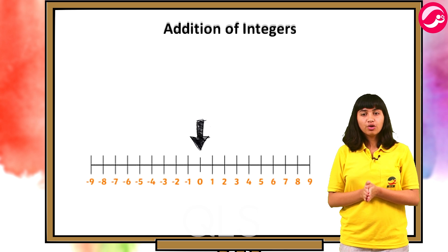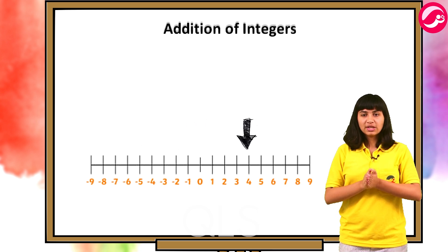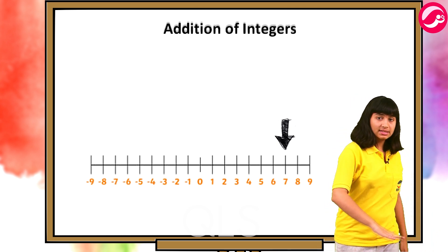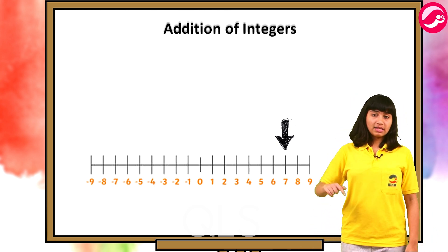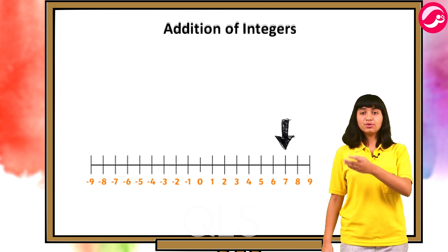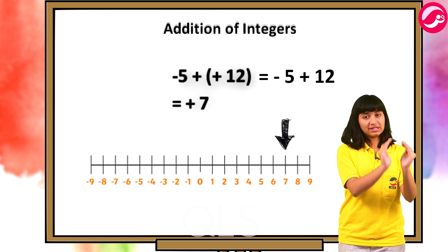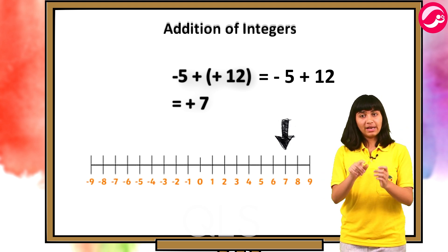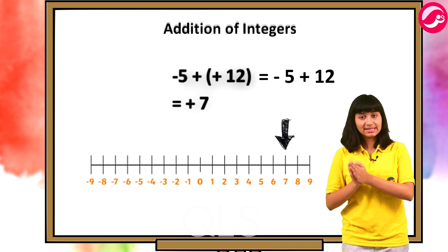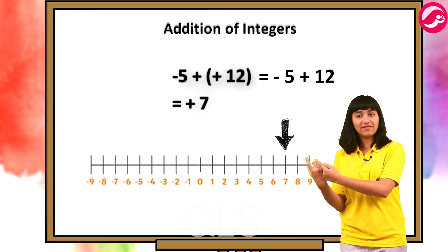Go down five steps from the ground level and then move twelve steps further up. Pahle paanch steps neeche utari — minus five — phir waapis se mujhe twelve steps upar chadhni hain. Toh likhungi minus five plus twelve. Answer hoga plus seven — minus five aur plus twelve ko add kiya toh answer aaya plus seven.